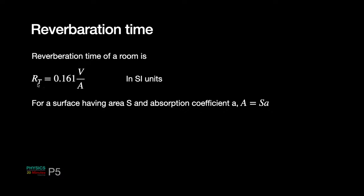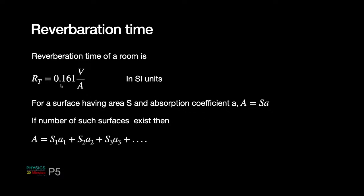Note that small 'a' has no unit, so the unit of S (square meters) carries over to capital A. The formula has volume in cubic meters and A in square meters, so their ratio has dimensions of meters. Reverberation time has dimensions of seconds, so the constant 0.161 has dimensions of seconds per meter. If a room has many different surface types, A is evaluated as the sum of the products of each surface area and its absorption coefficient: A = S₁a₁ + S₂a₂ + ...